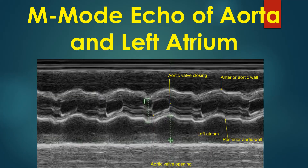Measurements of the left atrium are taken in systole while that of the aorta is taken in diastole. The open position of the aortic valve has the shape of a parallelogram, representing the movements of the right coronary cusp and the non-coronary cusp. The right coronary cusp is anterior and the non-coronary cusp is posterior. The closed position of the aortic valve appears as two parallel lines.